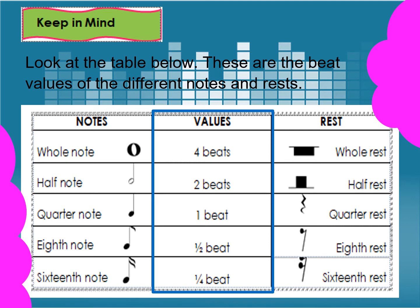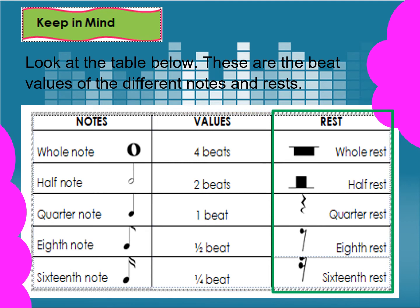The third column refers to rests. The different kinds of rest are: whole rest, half rest, quarter rest, eighth rest, and sixteenth rest.